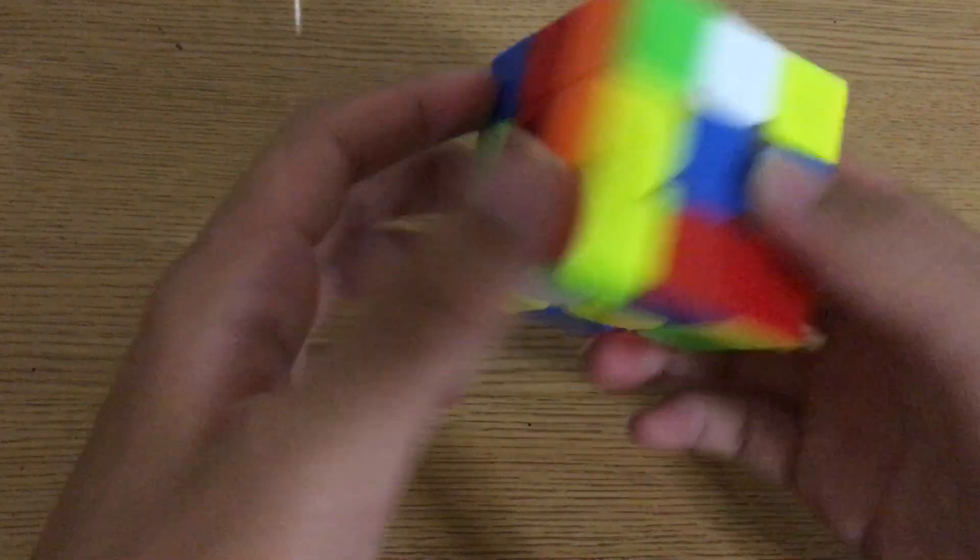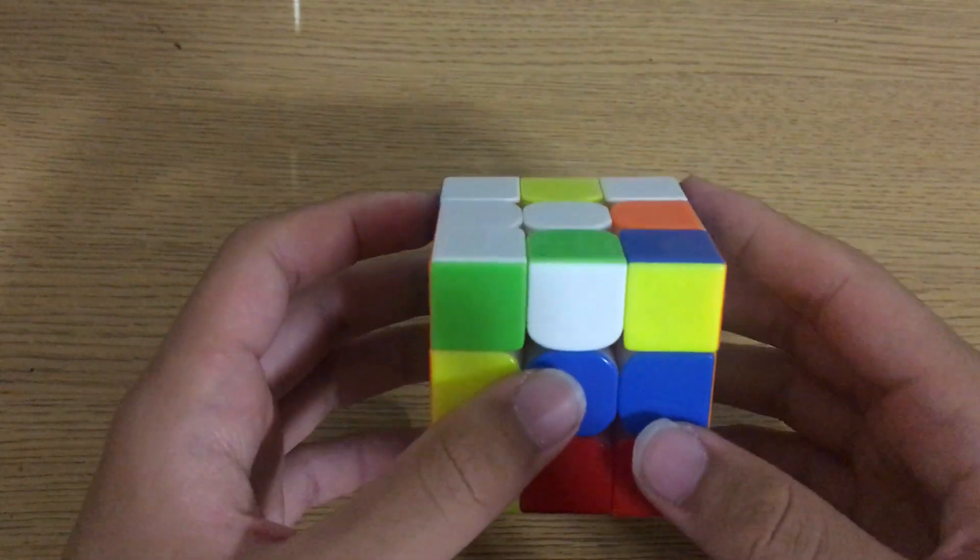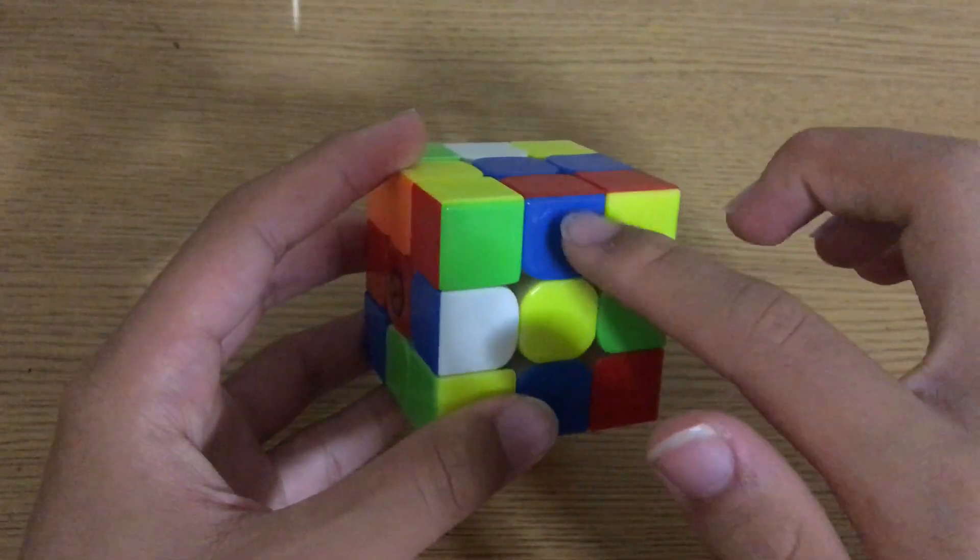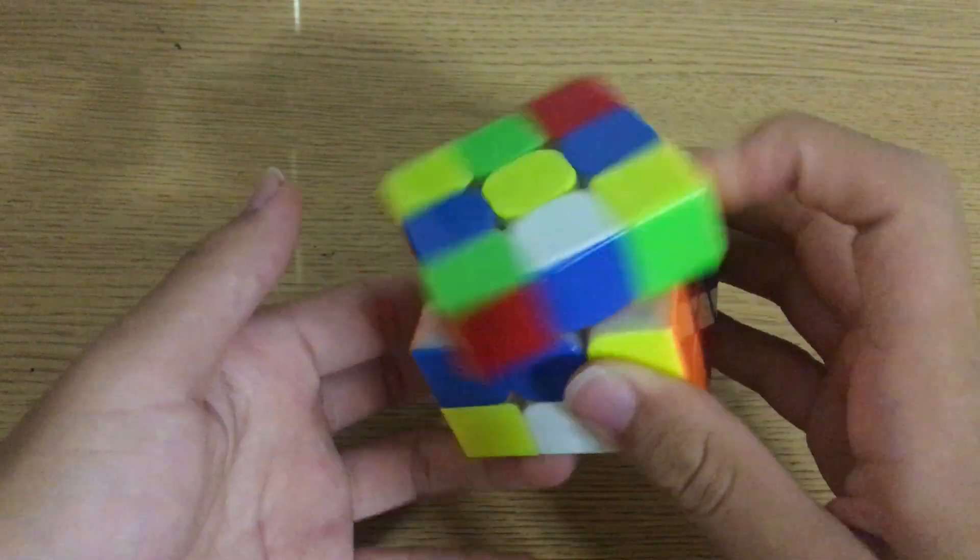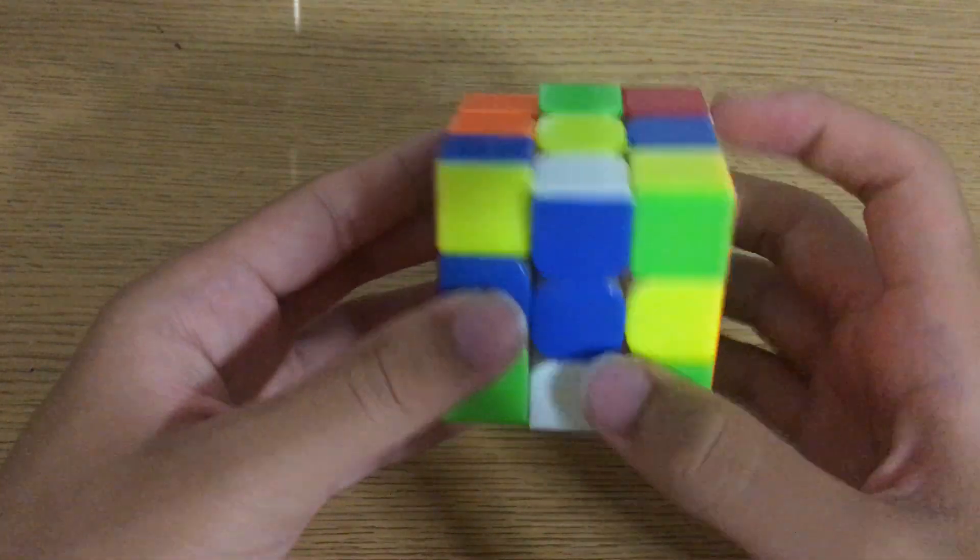Now let's move on to the third solve, which is a 4.78, keeping the sub-four streak in this average. Here, Matty does a blue cross. His cross pieces are here, here, here, and here. Now he can notice that he can solve these two relatively to each other, like so.